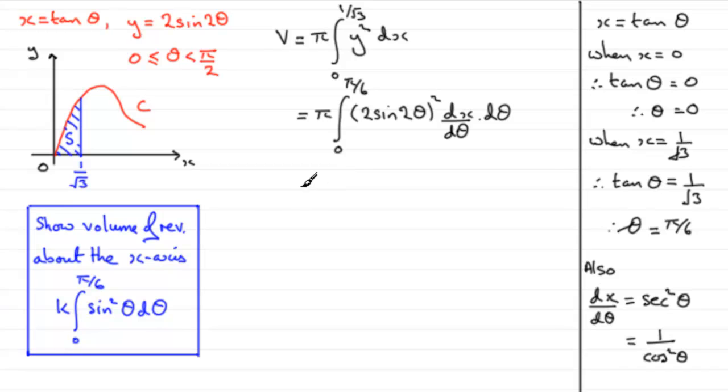So, when we come to substitute this in here, we've got pi times 2 squared. That's going to be 4. So, we could put the 4 out the front. We've got 4 pi then, multiplied by the integral going from 0 then to pi upon 6, of sine squared 2 theta.